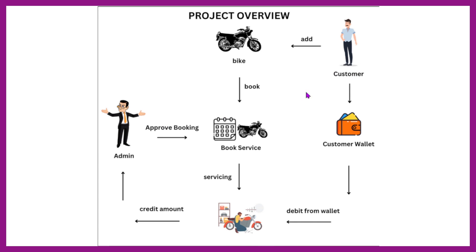Now let's see the project overview. The project contains two modules — customer and admin. First, the customer will register and log into the system. After login, the customer can add bikes — multiple bikes can be added. Then the customer can book a bike service by selecting the bike and the servicing date. After that, the admin will log in and will be able to see all customer bookings.